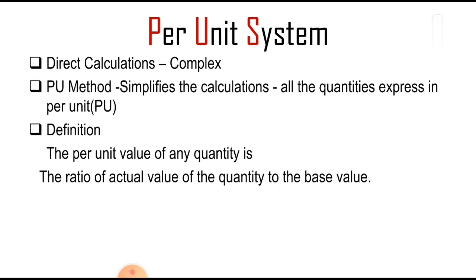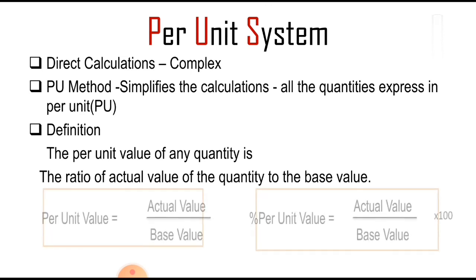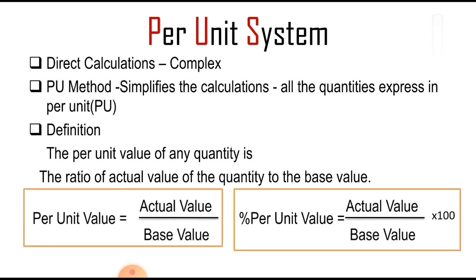In order to calculate the per unit value of any quantity, we will consider the expression: per unit value equals actual value divided by base value. We will represent it in terms of percentage, that is, percentage of per unit value equals actual value divided by base value times 100.